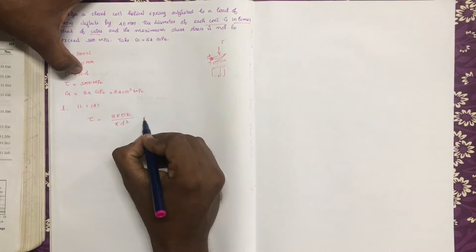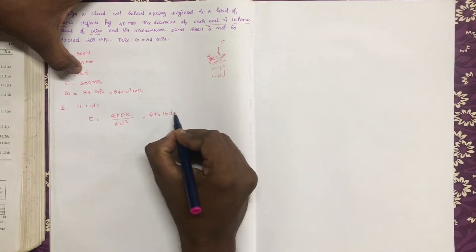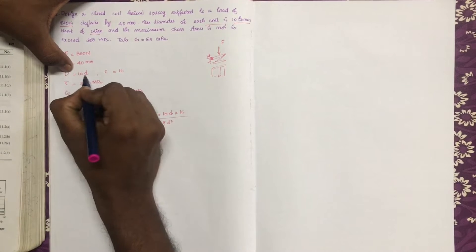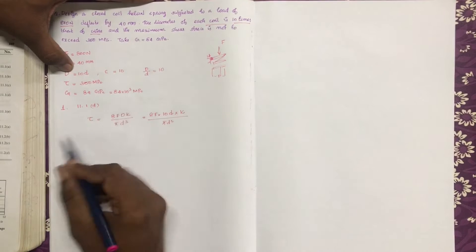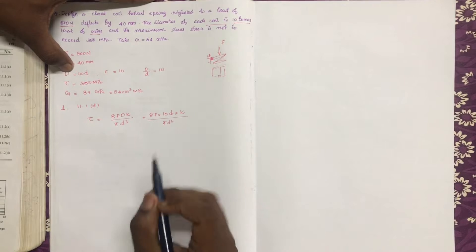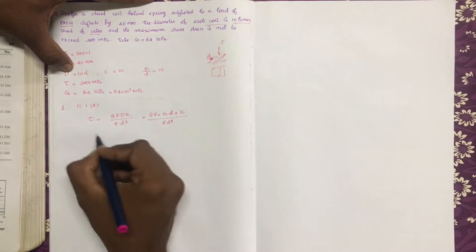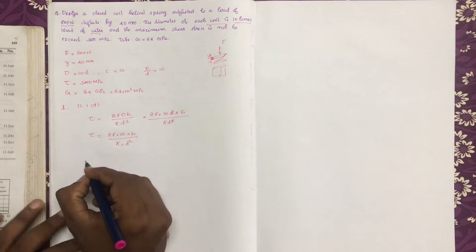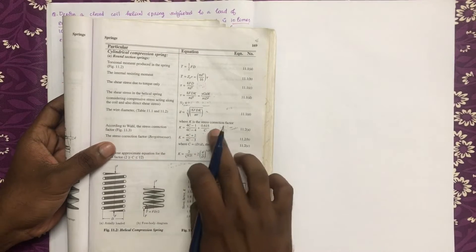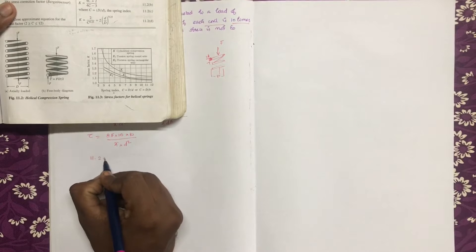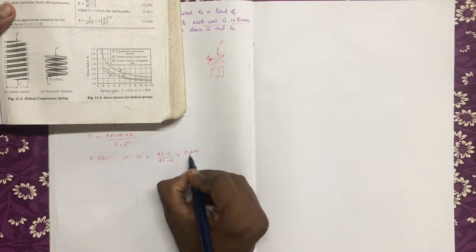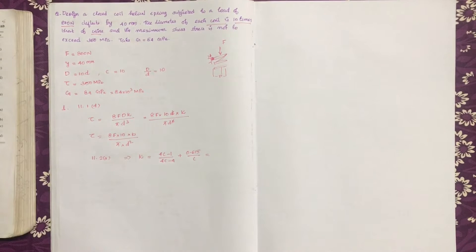Since D = 10d, we substitute into the equation. The spring index C = D/d = 10. The Wahl's correction factor K = (4C−1)/(4C−4) + 0.615/C. With C = 10, K is equal to 1.145.